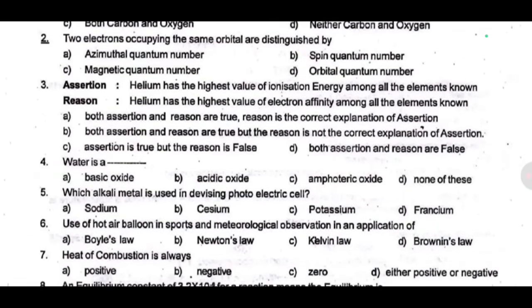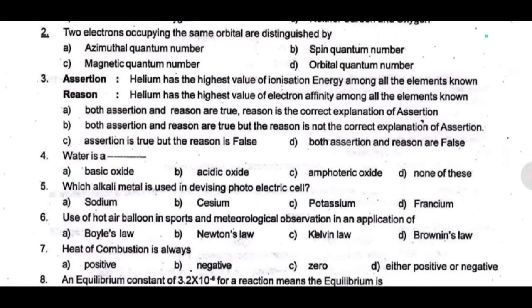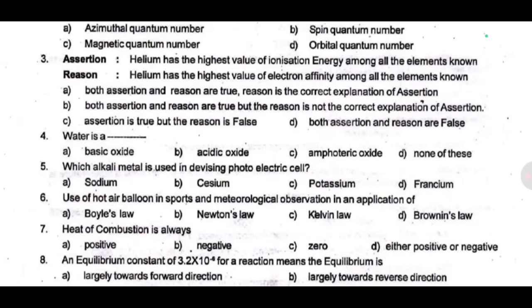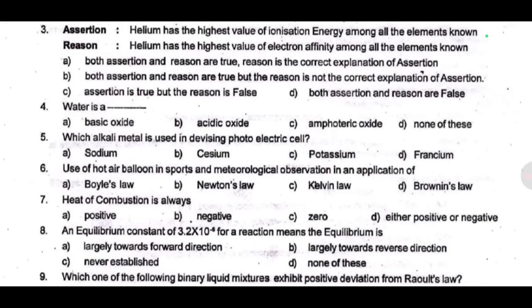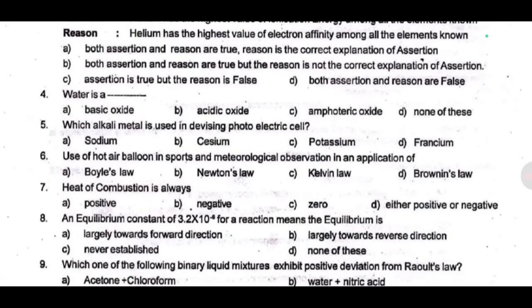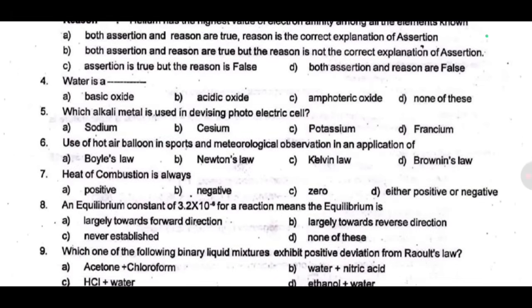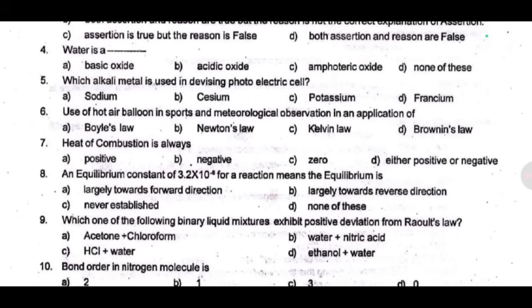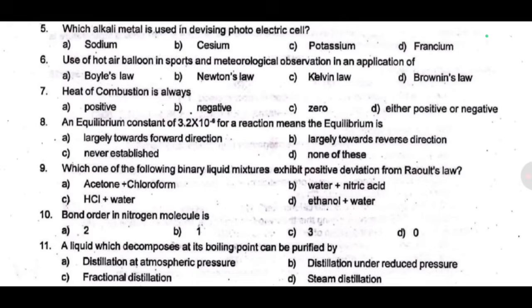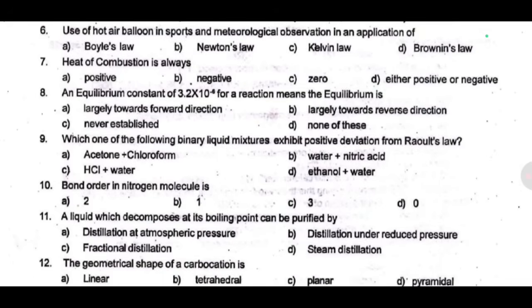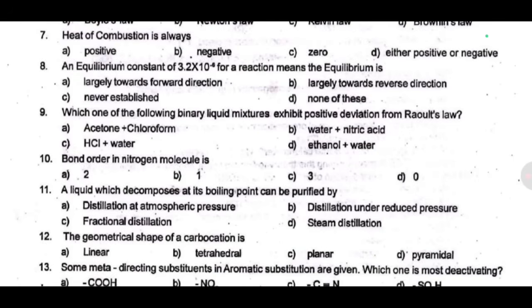Reason: helium has the highest value of electron affinity among all the elements known as dash. Fourth one — water is a dash. Fifth one — which alkali metal is used in devising a photoelectric cell? Sixth one — use of hot air balloon in sports and meteorological observation is an application known as dash. Seventh one — heat of combustion is always dash. Eighth one — an equilibrium constant of 3.2 × 10⁻⁶ for a reaction means the equilibrium is dash. Ninth one — which of the following binary liquid mixtures exhibit positive deviation from Raoult's law? Tenth one — bond order in nitrogen molecule is dash. Eleventh one — a liquid which decomposes at its boiling point can be purified by dash. Twelfth one — the geometrical shape of a carbocation is dash.